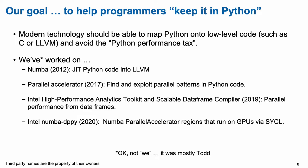We are heavily involved with Numba, and Numba is kind of our gateway into performance Python. Numba is a just-in-time compiler that works with Python code and basically drops it down to LLVM, through which you can access all sorts of performance-critical computing. We've done work with Parallel Accelerator, which finds patterns in code that it can exploit in parallel. We had a really cool data frame compiler that took data frames in Python and turned them into distributed programs. More recently, a group at Intel working with Todd came up with a way to map from Numba code, starting from data-parallel routines in Python, onto GPU code through SYCL.